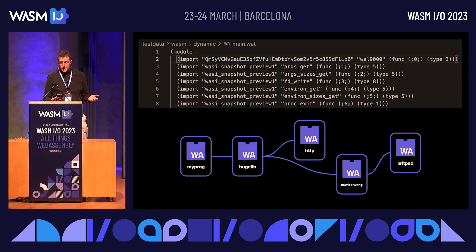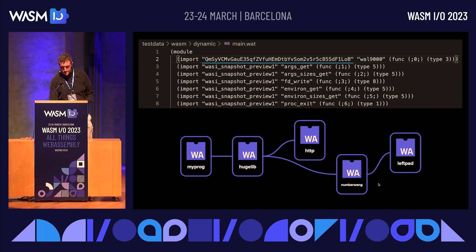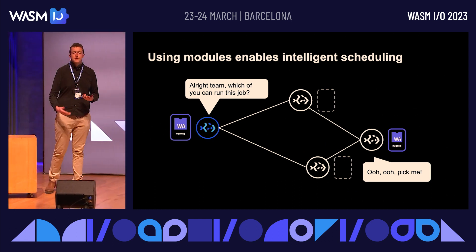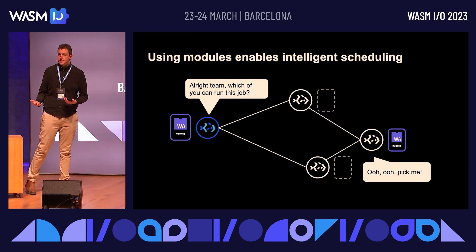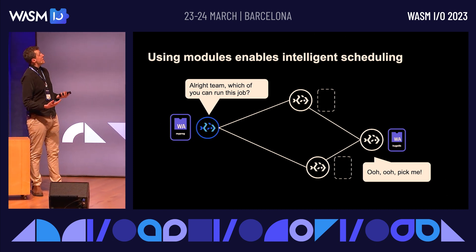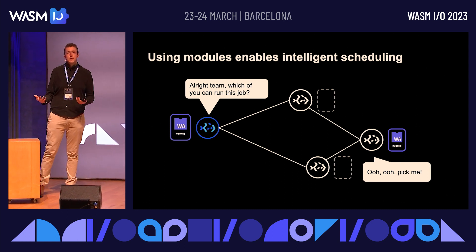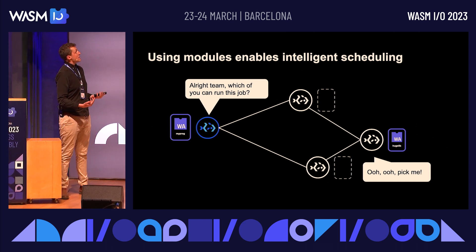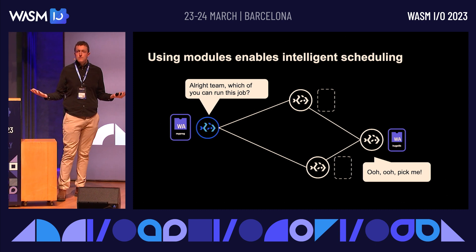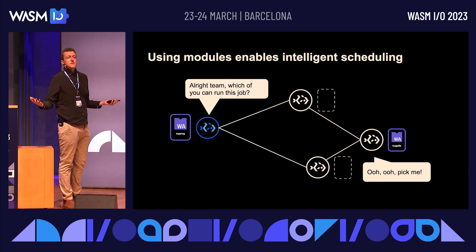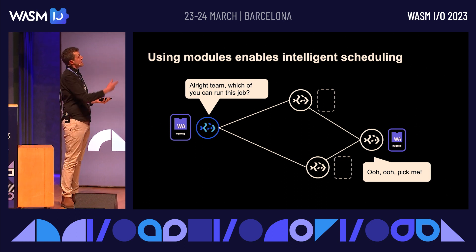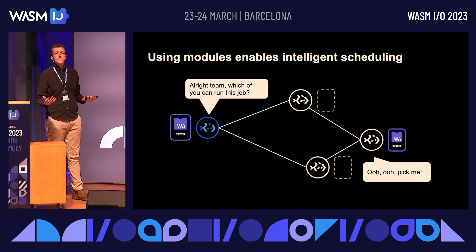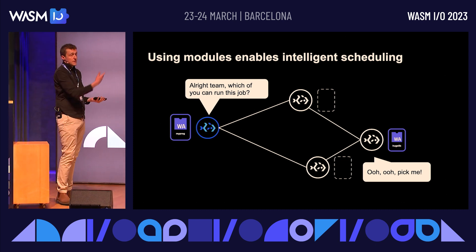This also gives us some extra powers — it means we can do intelligent scheduling. Now that we understand what dependencies modules need to run, we can ask our fleet of nodes who is the best person to run this job. For example, I've referenced my program against a large library, and I can ask: who already has that library and all of its dependencies? Make yourselves known — you are the right people to run the job. None of the other nodes will have to download anything that way.